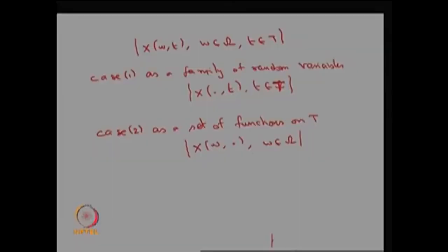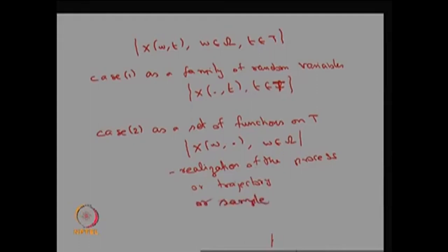In case 2, by fixing w I have made a collection of functions on T. Therefore, this is going to be called the realization of the process, or it can be called a trajectory, or it can be called a sample path, or a sample function. These are all different names — once you know one possible outcome, you are tracing the stochastic process along that outcome, which is the realization, trajectory, or sample path.